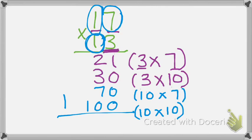Now, these are all called partial products, so I must add them all together. 2 plus 3 gives me 5, plus 7 will give me 12. I carry my 1, so I end up with my answer of 221.